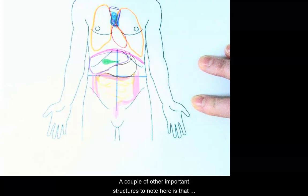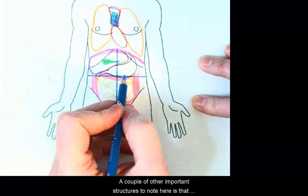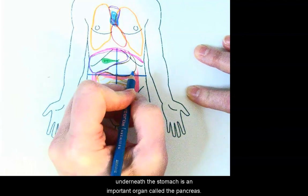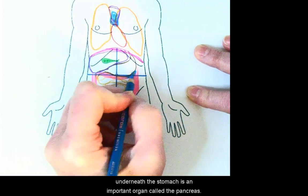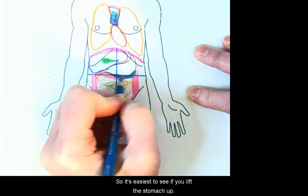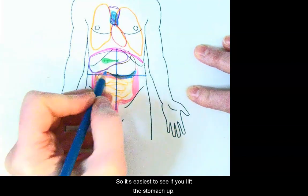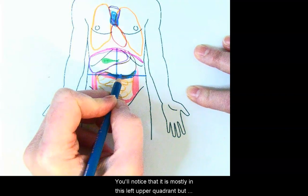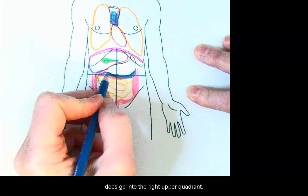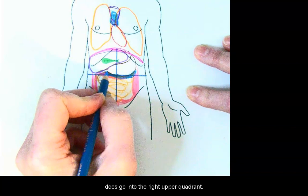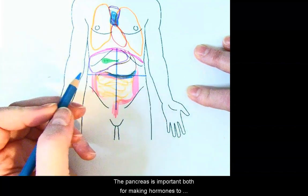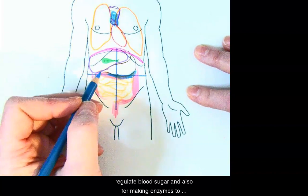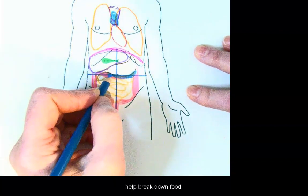A couple of other important structures to note here is that underneath the stomach is an important organ called the pancreas. So it's easiest to see if you lift the stomach up. You'll notice that it is mostly in this left upper quadrant, but does go into the right upper quadrant. The pancreas is important both for making hormones to regulate blood sugar and also for making enzymes to help break down food.